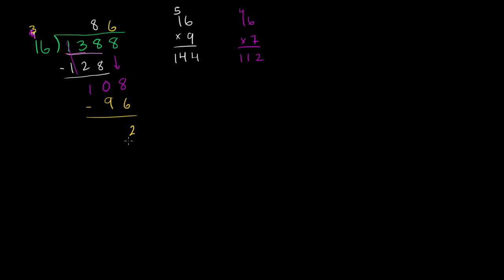Then you subtract again. 8 minus 6 is 2, and 10 minus 9 is 1. So then you have 12. And if we're not going into decimals, you're kind of done because 16 does not go into 12. So 16 goes into 1,388, 86 times with a remainder of 12.